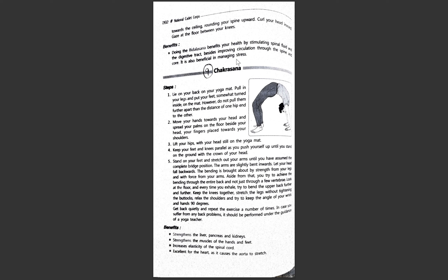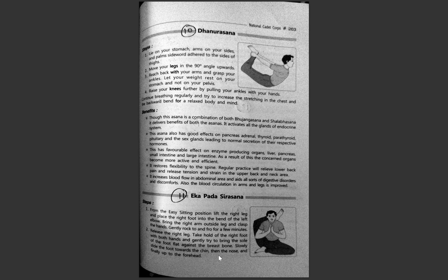The next asana is Chakrasana, where your whole body forms an arc. It gives strength to the liver, pancreas, and kidneys. The muscles of the hands and feet are toned and elasticity of the spinal cord increases. It is excellent for the heart because it stretches the aorta — the largest blood vessel of the heart — allowing fresh blood to flow out.